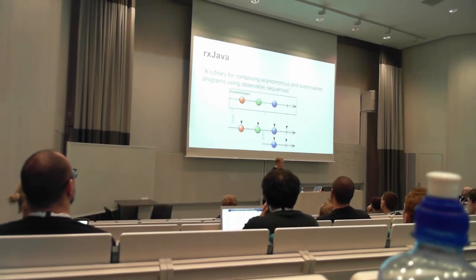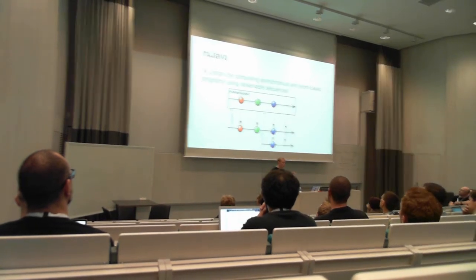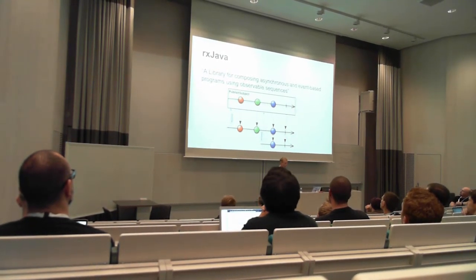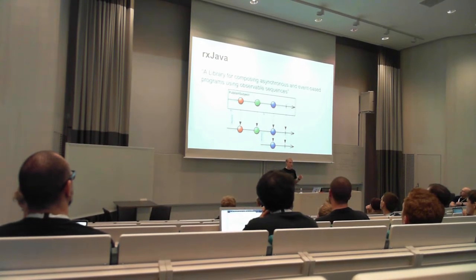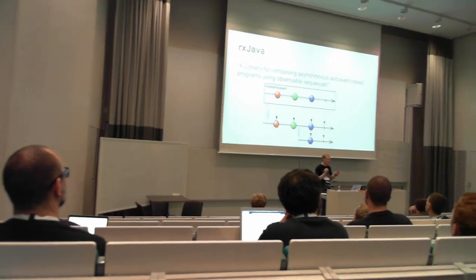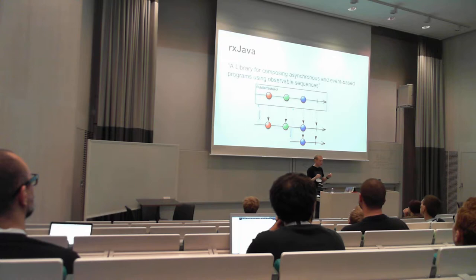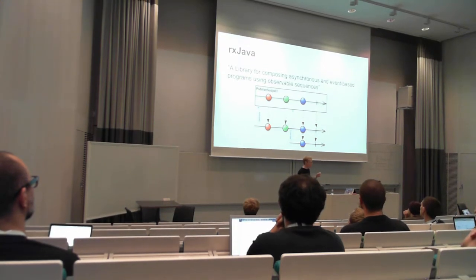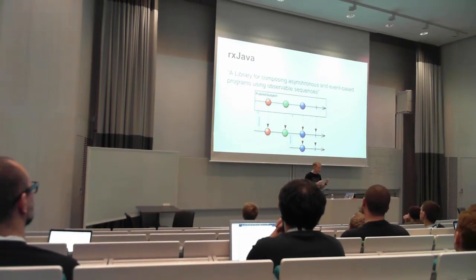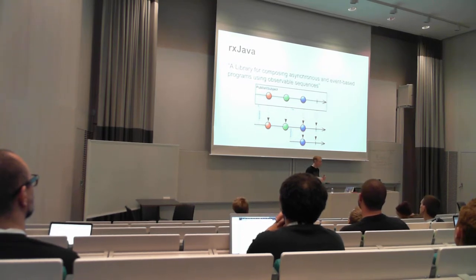If you look at the documentation, you can see a lot of features. On the top, you have a PublishSubject — this is the definition of a PublishSubject. On that subject you can publish items. In this case, you first publish an item, then another, then a new item. A little bit further down, you see two subscriber lines. The first subscriber subscribes to the subject and will receive all those items. Then a little bit later, someone else subscribes and only receives the new item.